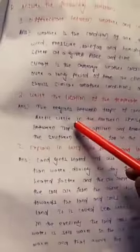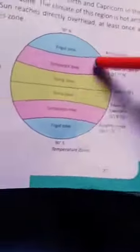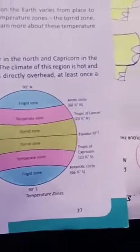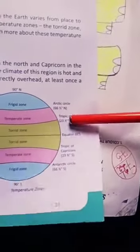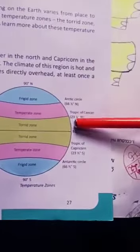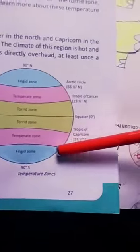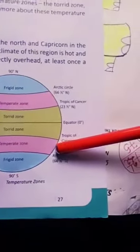Write the location of the temperate zone. The regions between Tropic of Cancer and Arctic Circle in the Northern Hemisphere and between Tropic of Capricorn and the Antarctic Circle in the Southern Hemisphere fall in the temperate zone.